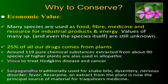Vinca rosea is used in cancer treatment. Sarpagandha, used in blood pressure medicine, contains reserpine. Most plants have some medicinal property. Many plants are used in allopathy as well. We should conserve biodiversity for its economic value: food, fiber, medicine, and ecosystem services.